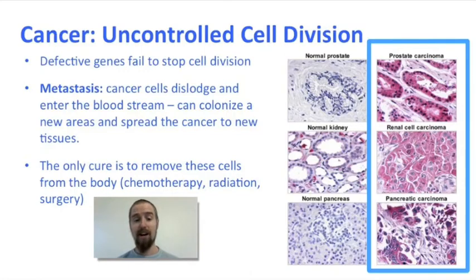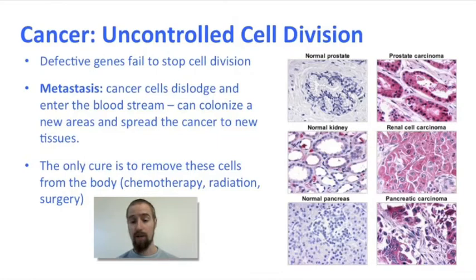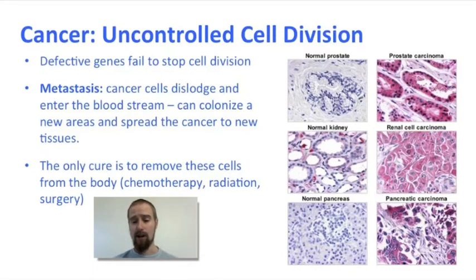People who do not inherit any faulty cyclin genes would need two unfortunate mutations to disrupt the cell cycle and cause cancer, and that's far less likely. So anyone can get cancer, and the older you get, the greater your chances are of developing cancer. But genetics can make a person predisposed to certain types of cancer, which is why certain types of cancer seem to run in families.